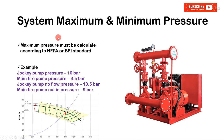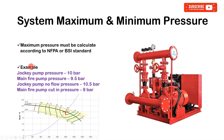System maximum and minimum pressure must be calculated according to NFPA or BSI standards. You can use carrier pipe sizing charts to calculate friction losses and other parameters. In this example, the jockey pump pressure is 10 bar and the main fire pump pressure is 9.5 bar.